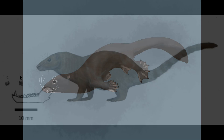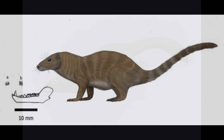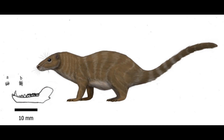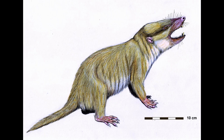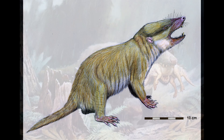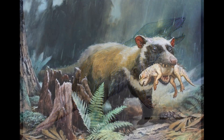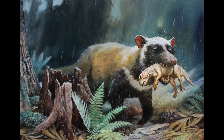Although Eutraconodonts such as this survived in Africa while their northern cousins died out during the late Cretaceous, this did not spare them from a great deal of evolutionary competition. The arrival of placentals and metatherians during the Paleocene pushed African Eutraconodonts into increasingly specialised niches, including gliding arboreal hunters and large fossorial forms.